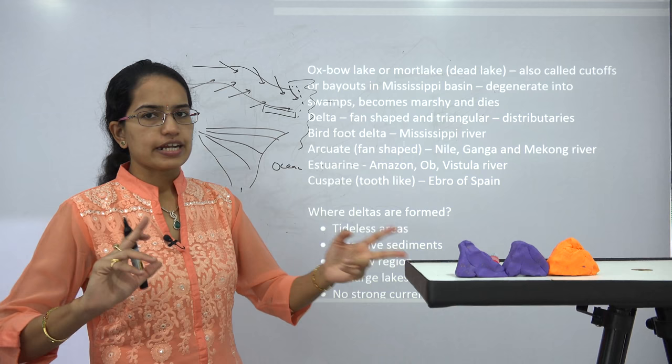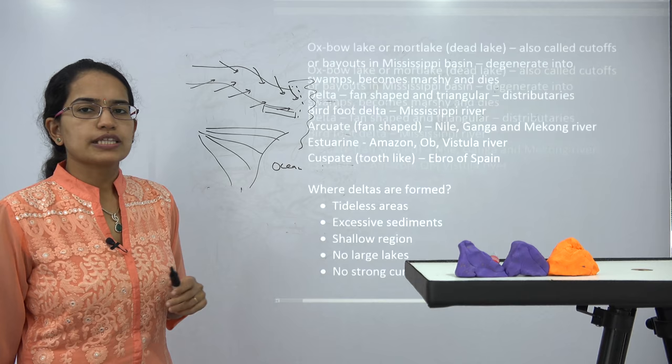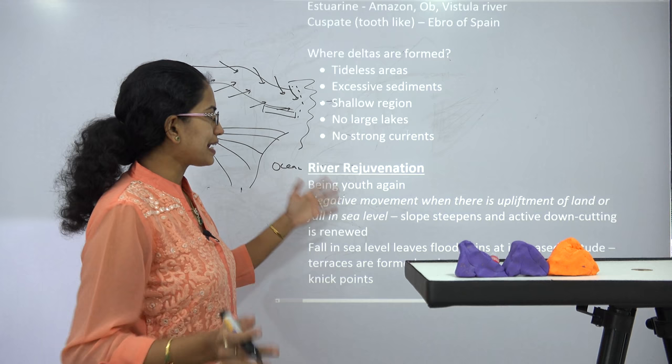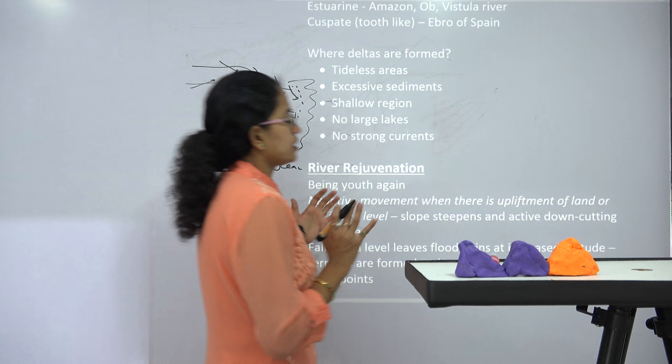The birdfoot delta is commonly seen in the Mississippi River — sometimes there are direct exam questions on which delta corresponds to which river, so you must memorize them. Deltas form where there is no strong tidal movement, no big currents, and a huge sediment load is being carried by the river.